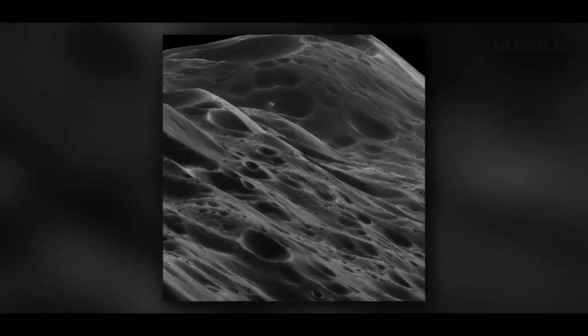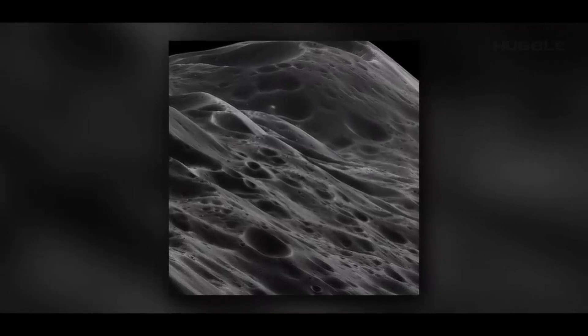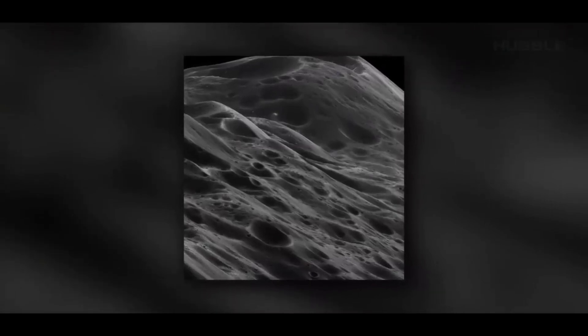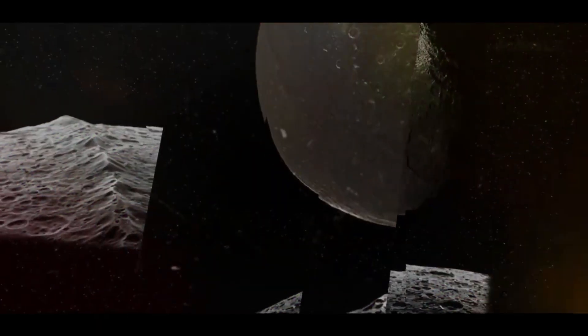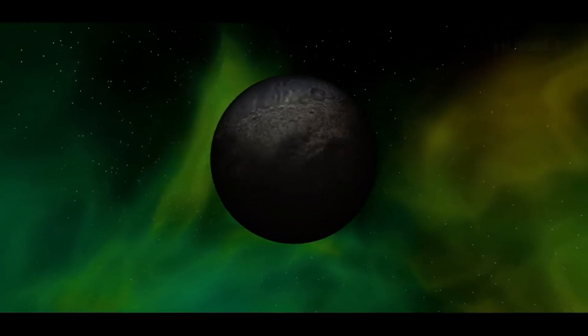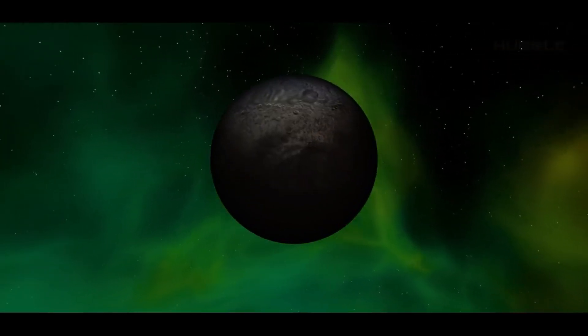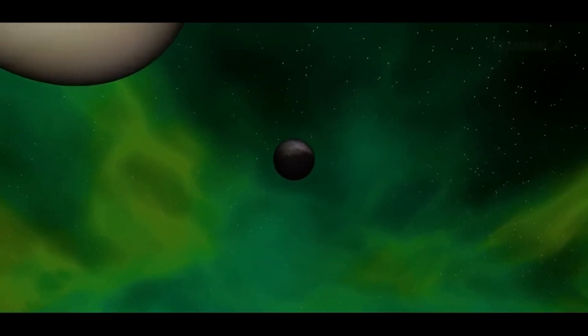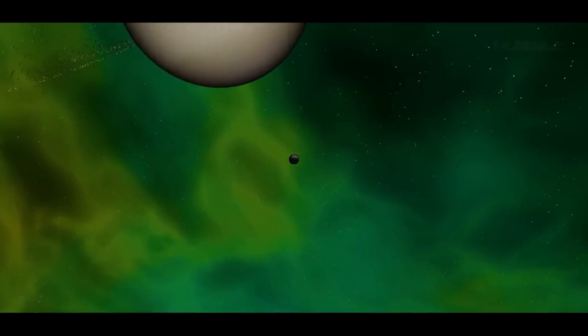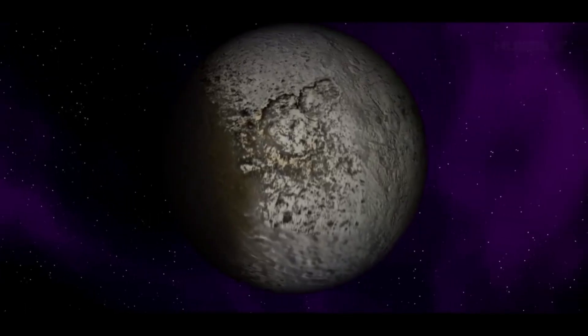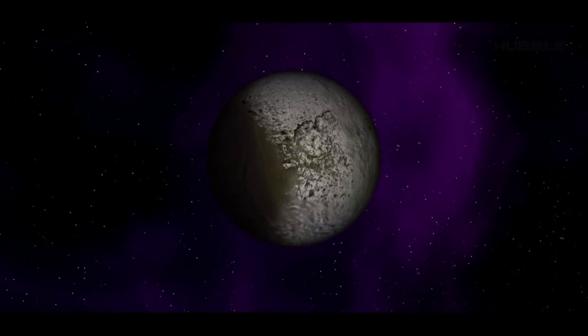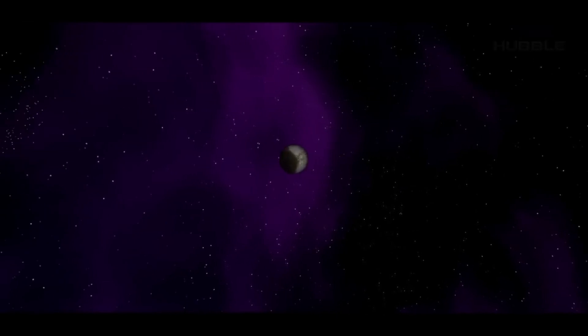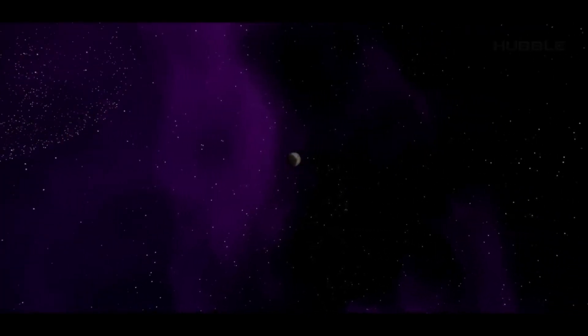For this reason, the Iapetus Wall is sometimes also called the Voyager Mountains. However, scientists have not yet been able to determine exactly what factors are responsible for the appearance of this mountain. There are several theories. According to one version, the mountain formation arose as a result of geologic activity in the early stages of the formation of the satellite. At that time, Iapetus had a shorter rotation period and a higher surface temperature. The mountain range could have formed from material that came to the surface and solidified.